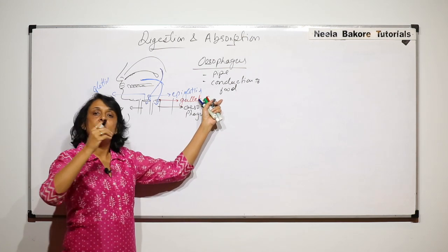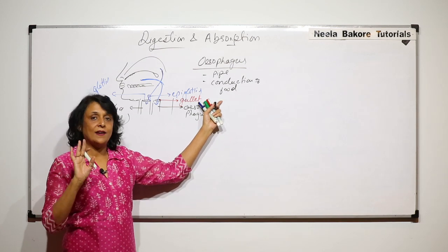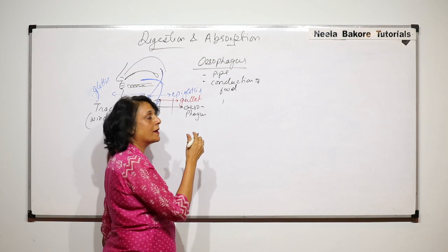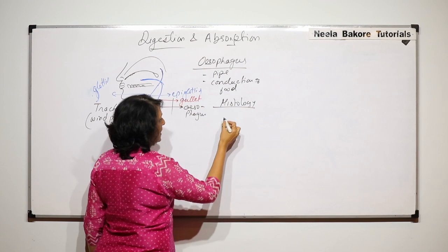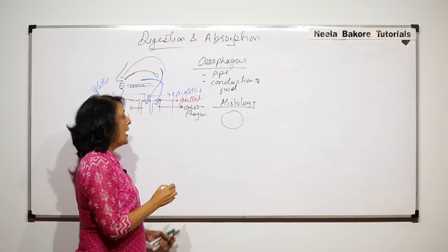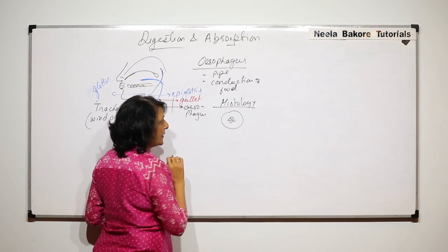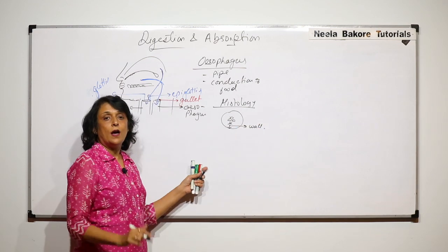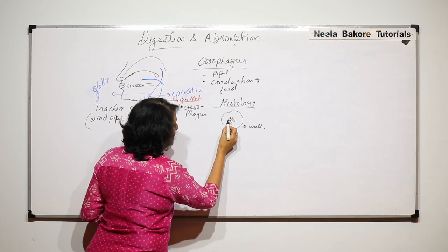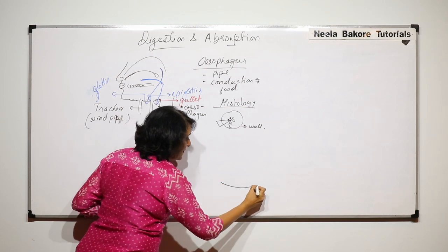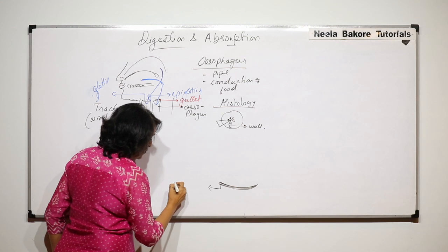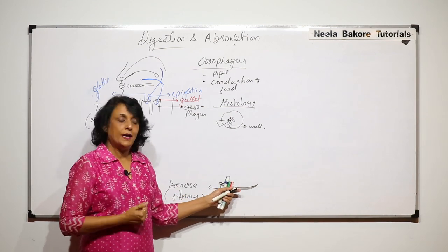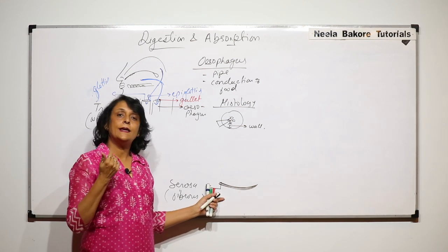In the whole alimentary canal, from the esophagus onwards, there are four layers. If we take a cross-section of the esophagus and look at the wall, the lumen is very small. Starting from the outside, the first layer is the fibrous layer, also called serosa. It is a fibrous layer made of collagen and elastin fibers, providing structural strength.